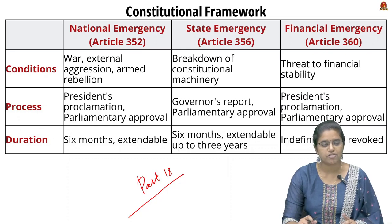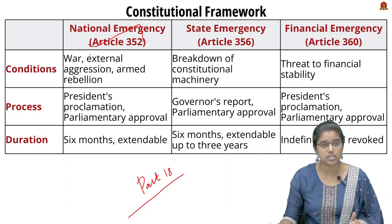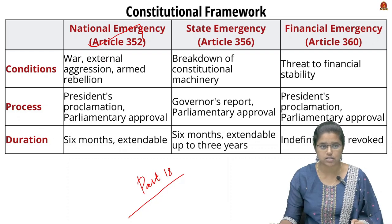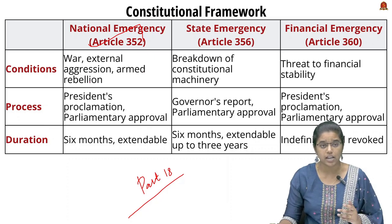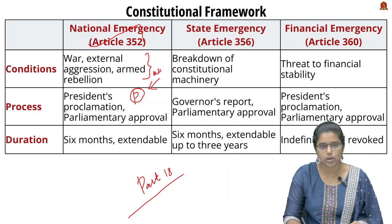The National Emergency is given under Article 352. It is declared when the nation or part of the country is under a security threat. The President will proclaim the National Emergency on grounds of war, external aggression, and armed rebellion. These are the three grounds on which a National Emergency will be declared in India.